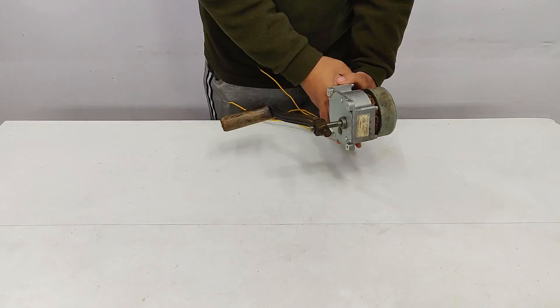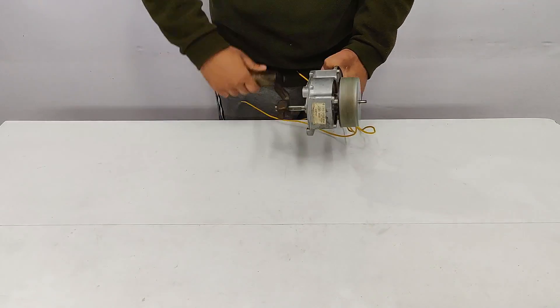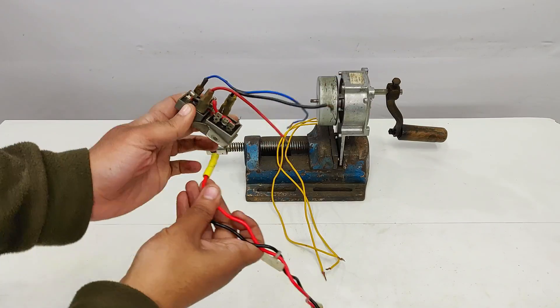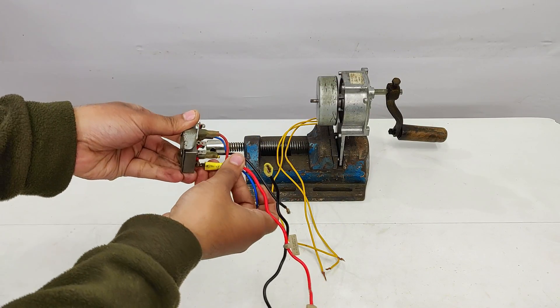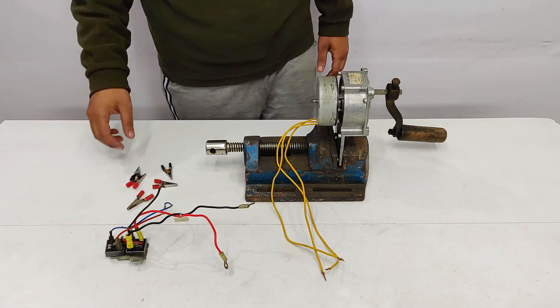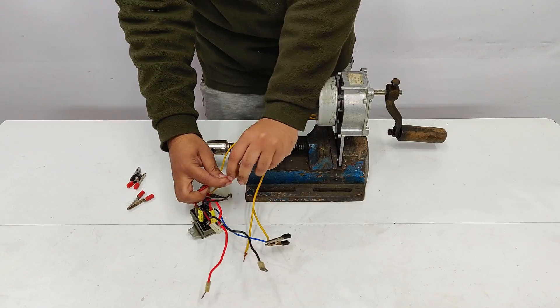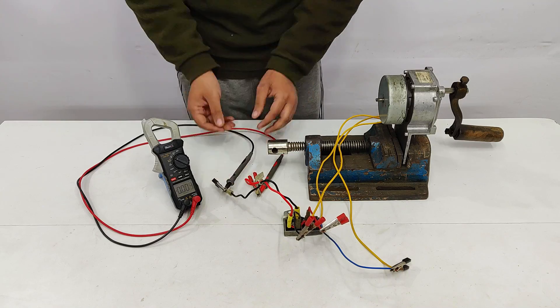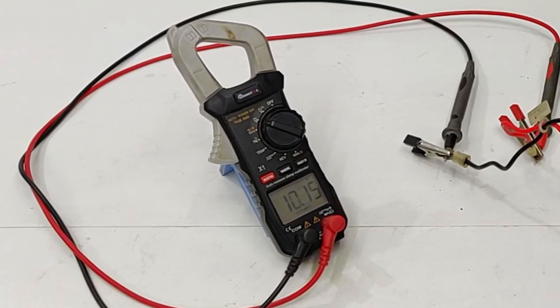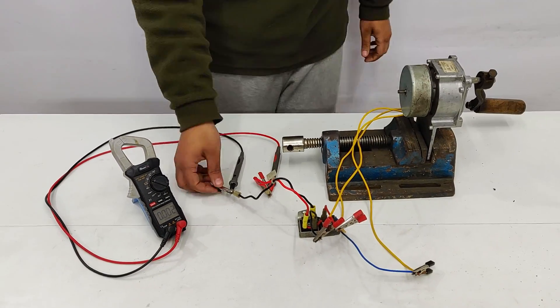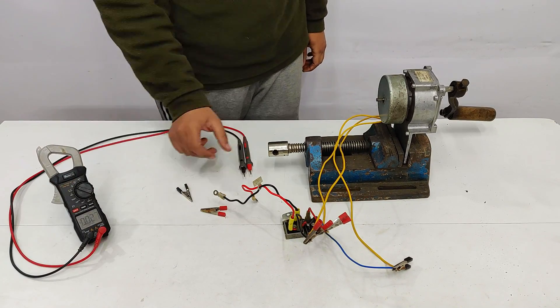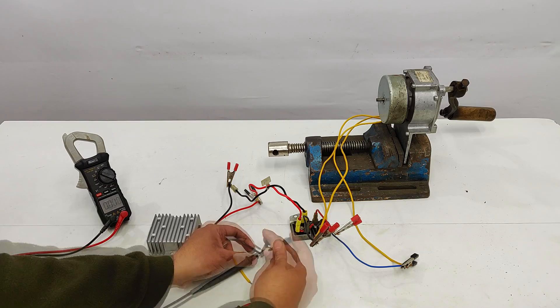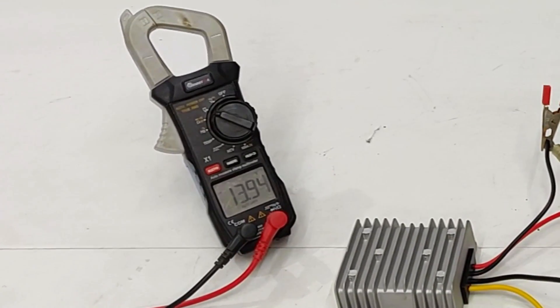The fifth application is using this DC converter for electric generators. This is a three-phase brushless generator with an AC output, so we're going to need a three-phase bridge rectifier to convert the output to DC. The output of the rectifier will be connected to the input of the DC converter. This way we can get fixed 13.8 volts output from a variable DC output of a wind turbine or any generator.